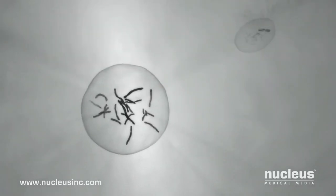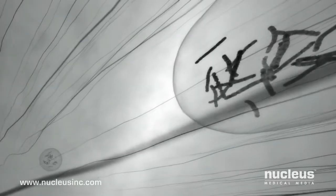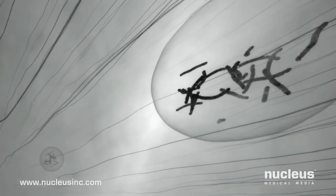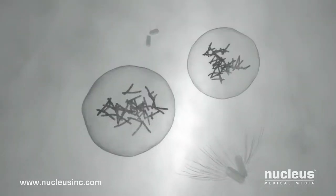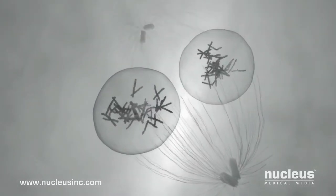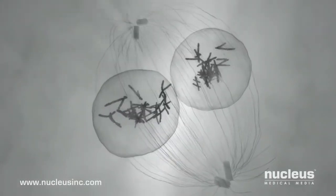As the male and female pronuclei form, spiderweb-like threads called microtubules pull them toward each other. The two sets of chromosomes join together, completing the process of fertilization.